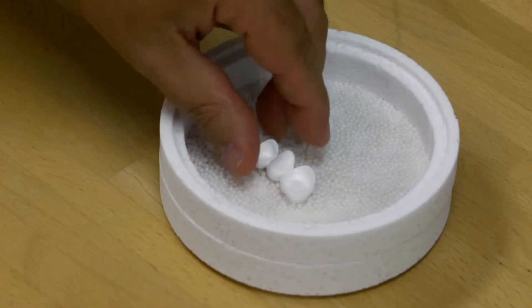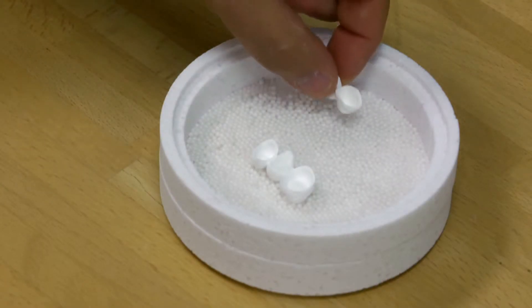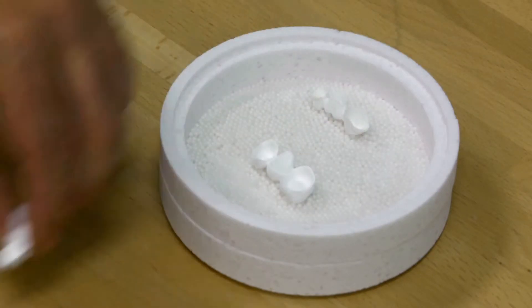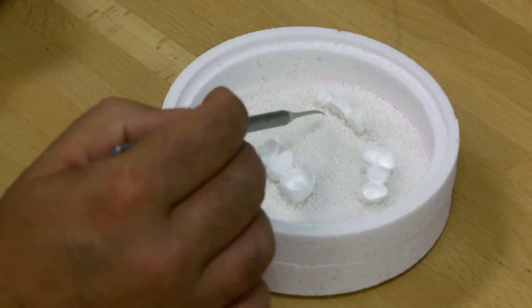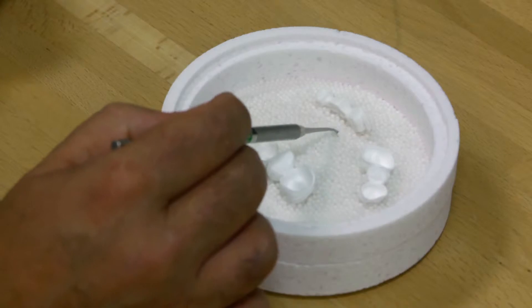Only use the sintering trays and beads intended for the respective high temperature furnaces when sintering Inchorus TZI. Make sure that the restorations are lying completely on the bed of beads. Remove beads lying interdentally with a probe so that shrinking is unhindered.